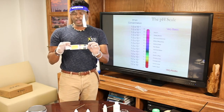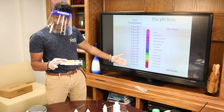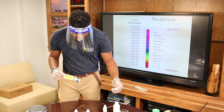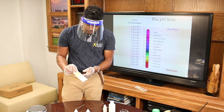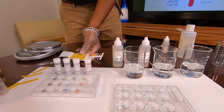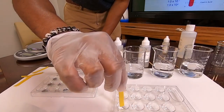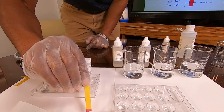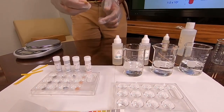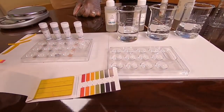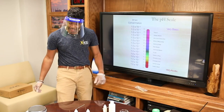pH paper is an easy way of figuring out where an acid or base falls on the pH scale. Most acids and bases are clear, so by looking at them with your eyes you can't tell exactly where they fall. However, if I take and dip the pH paper into an acid, I can quickly see where it is. Hydrochloric acid has a pH of 1 — way down at the very acidic end, almost like gastric acid.